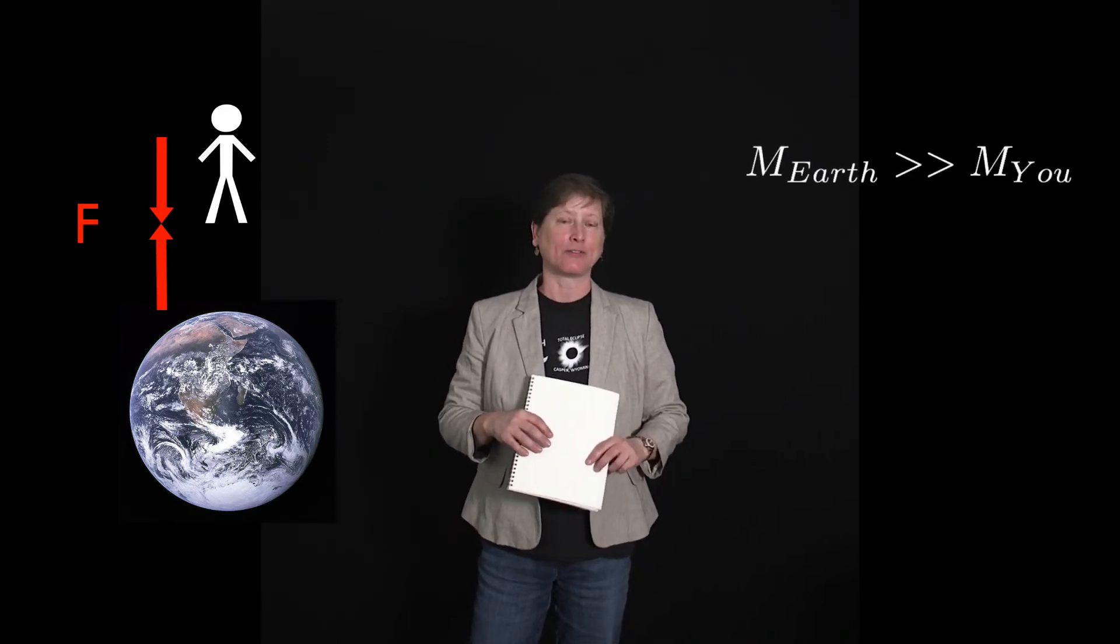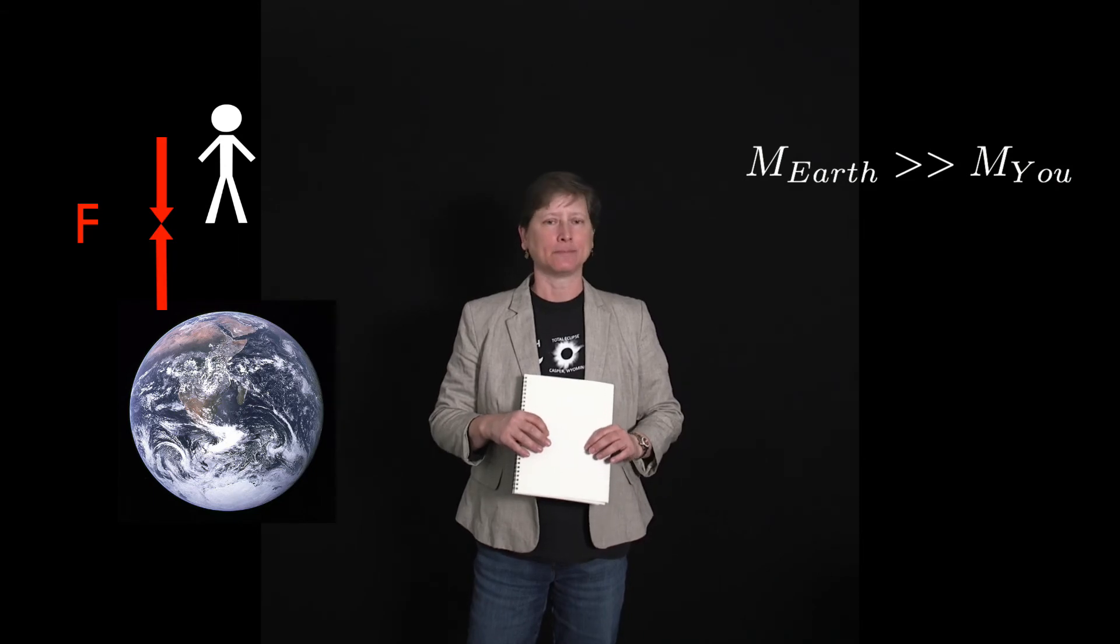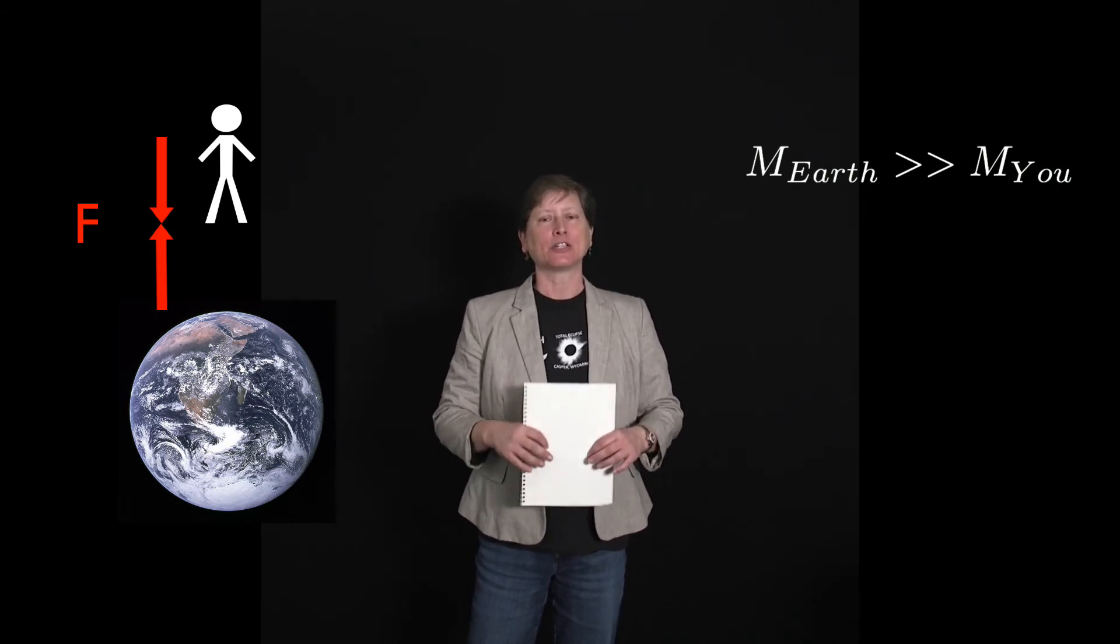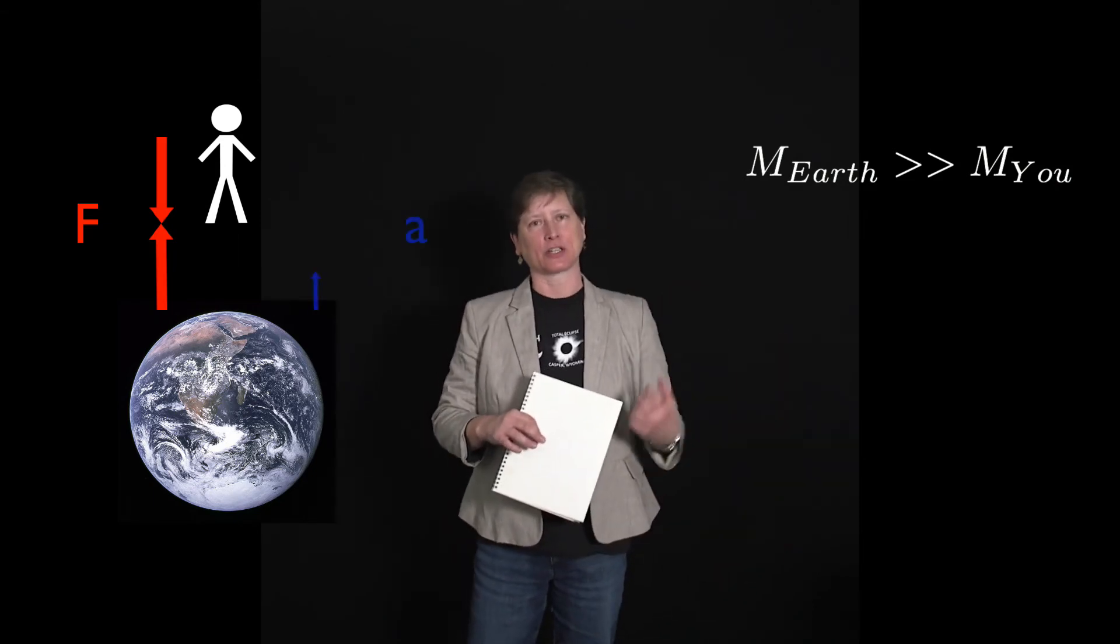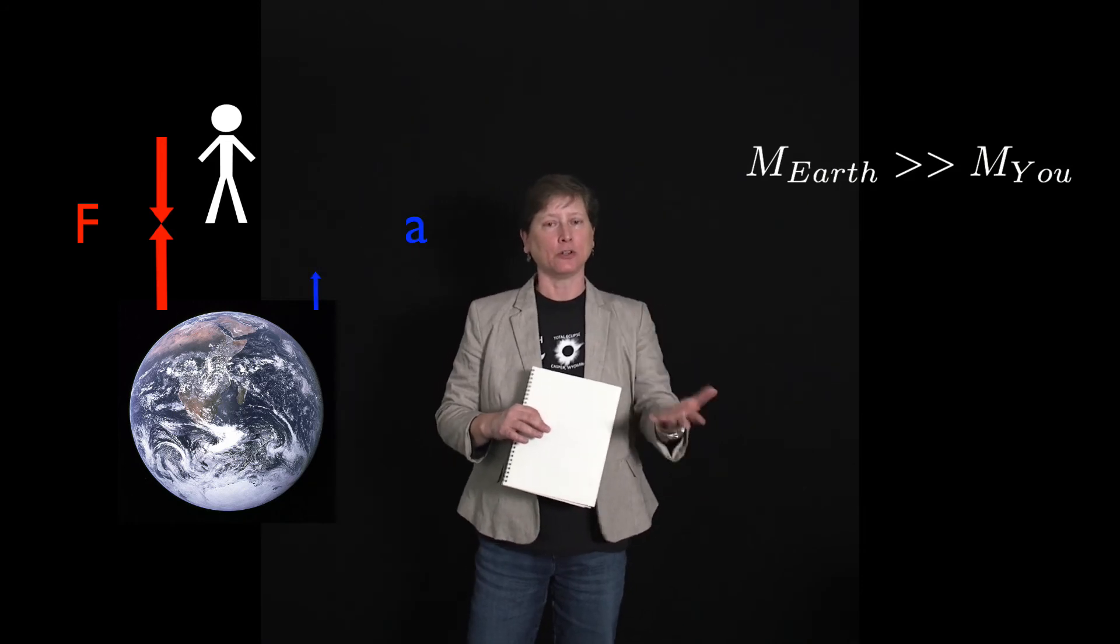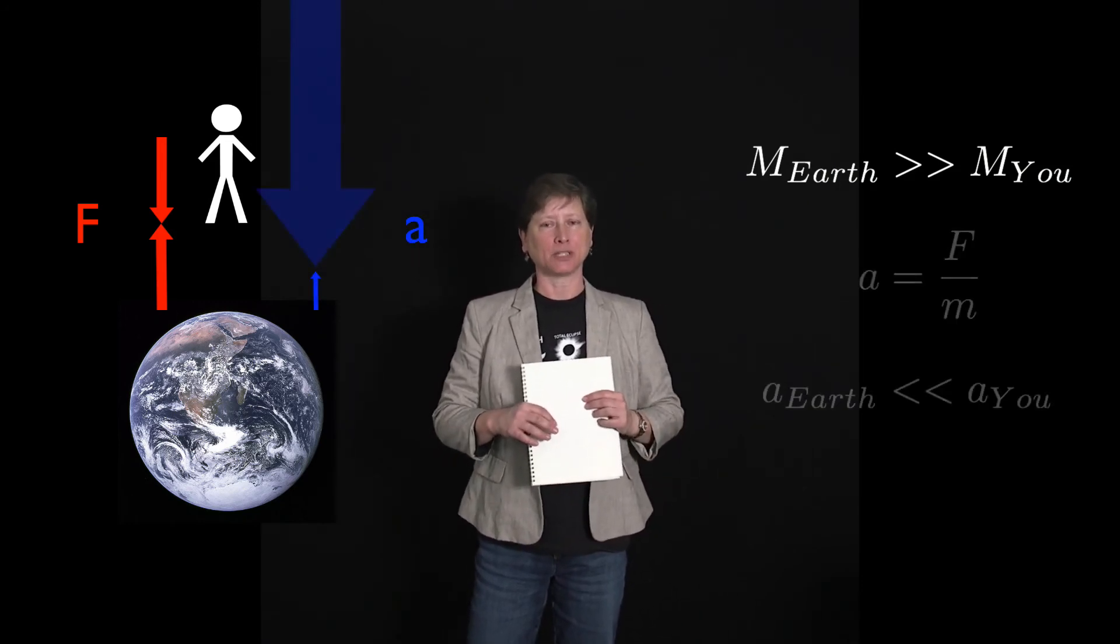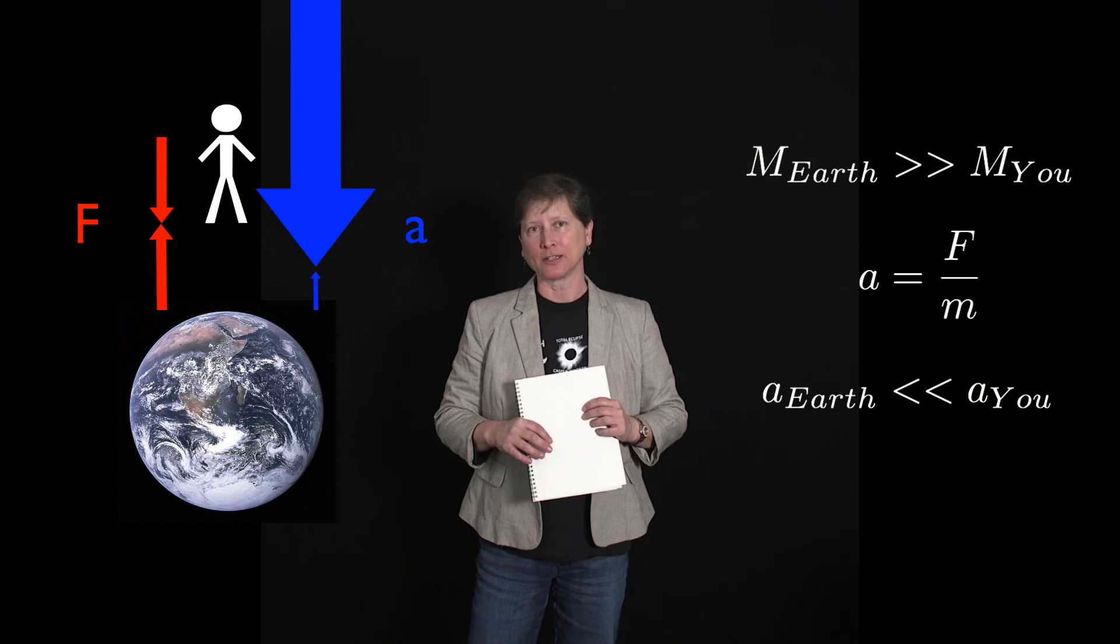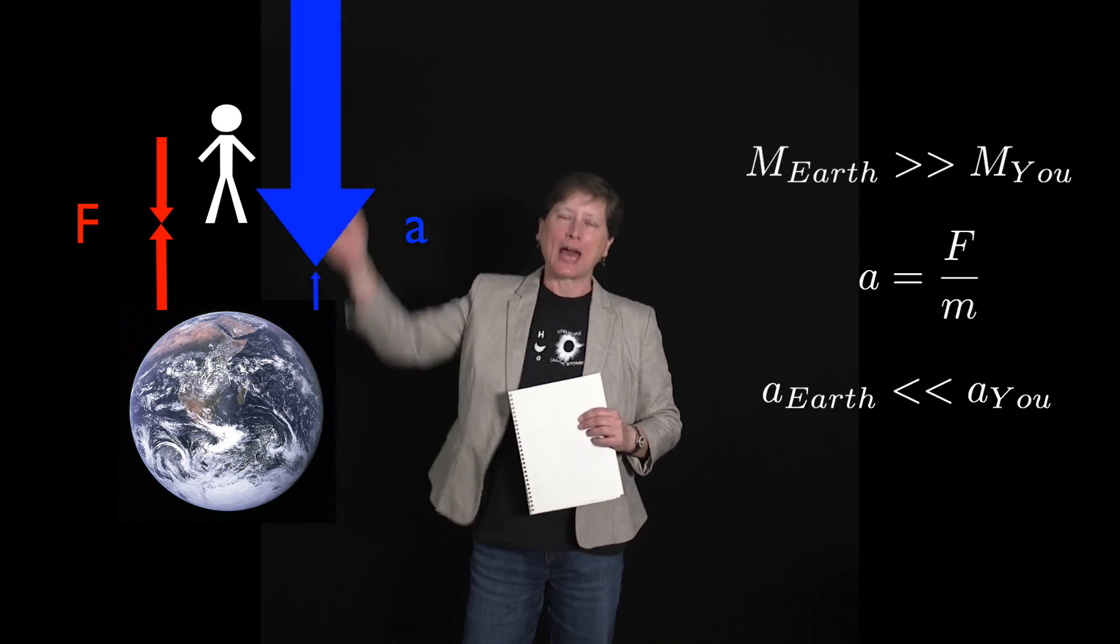The difference is that Earth out masses you by a factor of about 100 billion trillion. The acceleration Earth experiences as a result of interaction with you is 100 billion trillion times smaller than your acceleration as you fall off a roof.